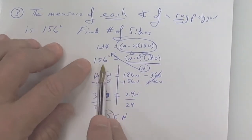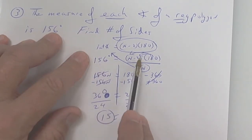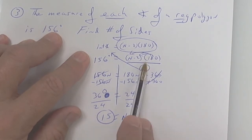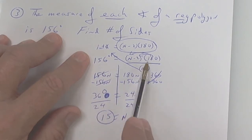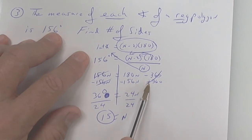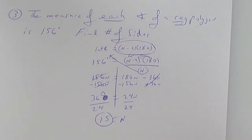The key is: if 156 represents one angle, take the sum and divide by n to get one angle equal to one angle. Then multiply by n, distribute, move the 156n over and subtract, then move the 360 over and divide. That's how you do that last part of yesterday's work. Put away your bell work.